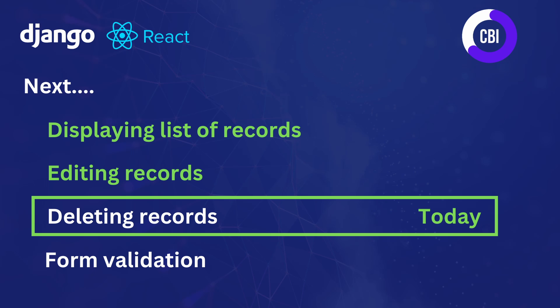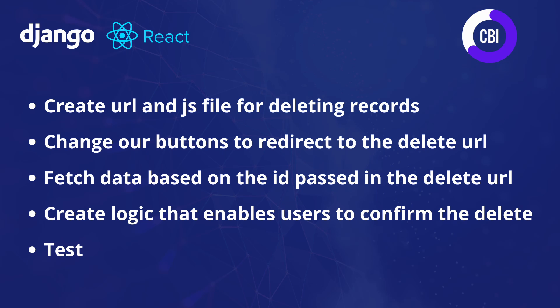In this video, we're going to continue and focus on deleting records from our database from our React.js frontend. To realize that, we're going to be following five main steps. First, creating a URL in a JavaScript file for deleting records. Next, changing the buttons on our homepage to direct to the right page for deleting the record, parameterized with the ID. Then fetching data on that page and getting the ID from the URL to delete the correct record. We'll also create logic to confirm whether the user wants to delete a record or not, and finally test everything.